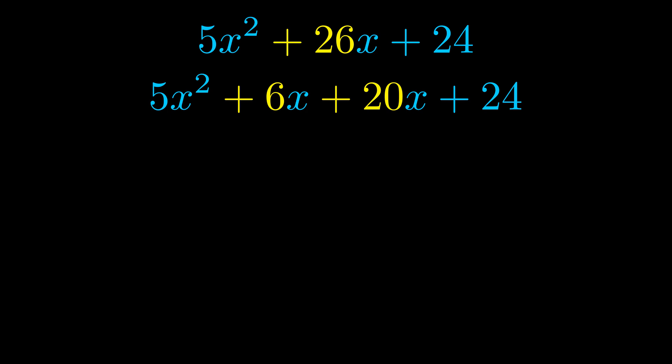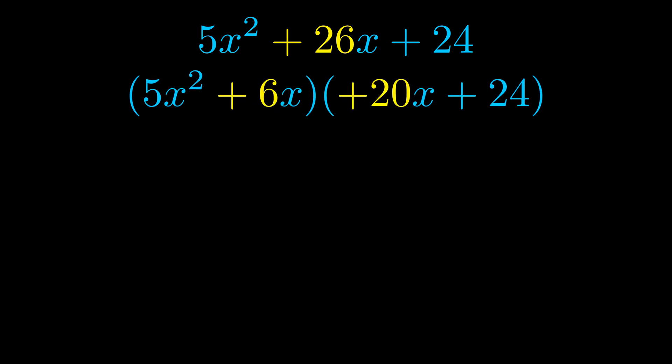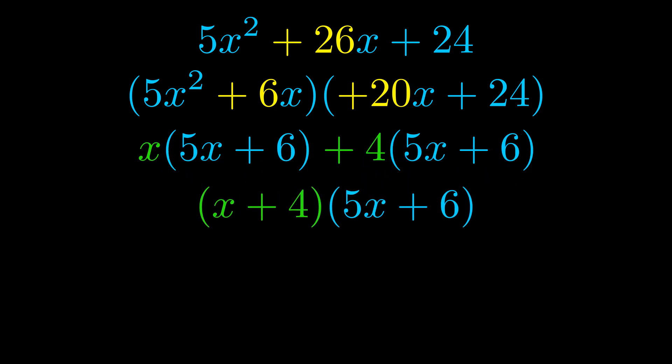Once we've done this we go ahead and we put parentheses around the first term and the last term and we do that so that we can take the greatest common factor out of both terms. We can see the greatest common factor is now outside in green. Notice also how what remains inside of the parentheses is the same in both cases. The blue values are the same.